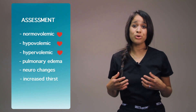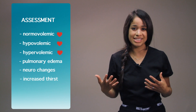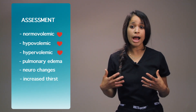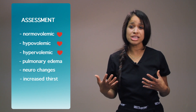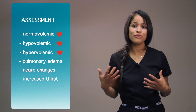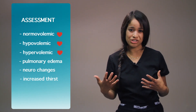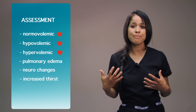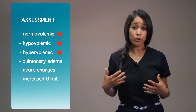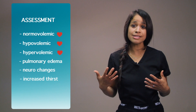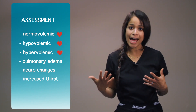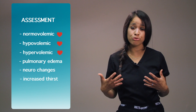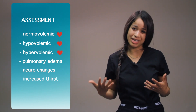Moving on to the neurological system. For your patient that is normovolemic or hypovolemic, he or she may have confusion or seizures. With hypervolemia, your patient may have lethargy or coma. Early symptoms may present as muscle contractions, which can later progress to muscle weakness.